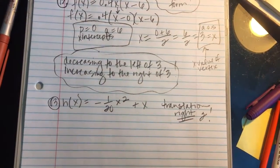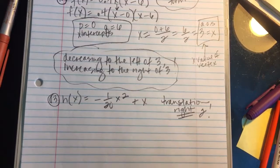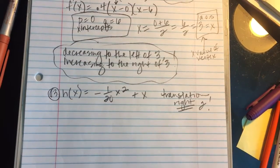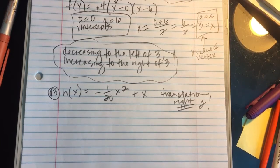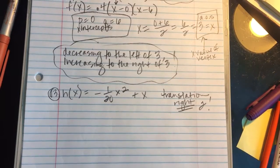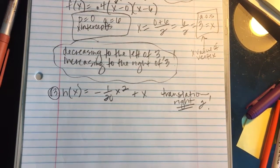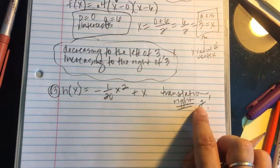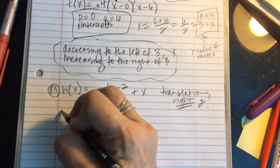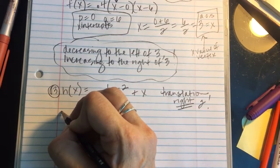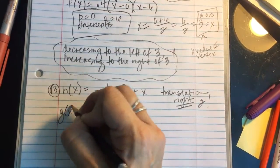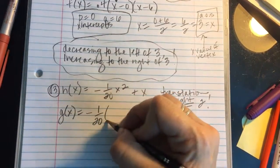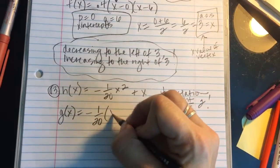And if I'm going to be dealing with a translation to the right, translations right have an impact on the x values. Horizontal translations impact the x values. Wherever I see an x value, I need to consider this to be an x minus h. Did they give me a name for a new function? No, I'll just write it as g(x).